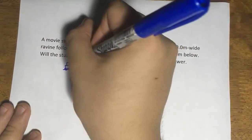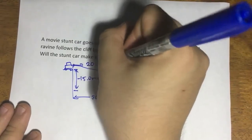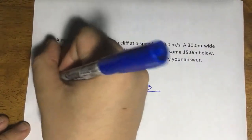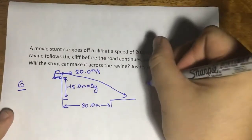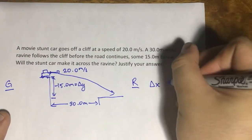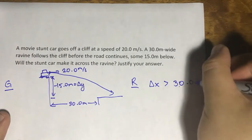And the car was going off at a velocity of 20.0 meters per second. We want to find out, so this is given, required would be...